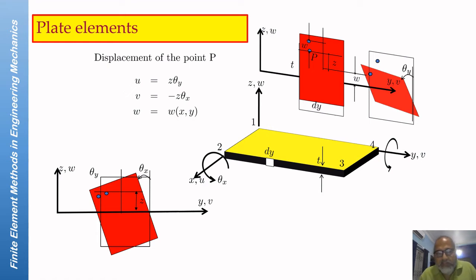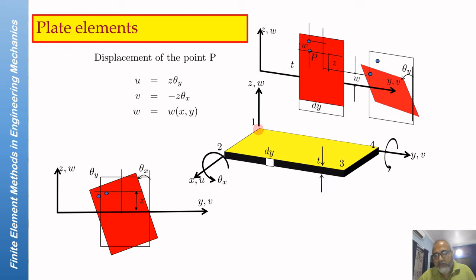Finally, let us consider a case which we have not considered before, where a rectangular plate is modeled with four-noded plate elements. The four-noded plate elements are rectangles with four nodes and there is a thickness T. These plate elements are like beam elements but in two dimensions.